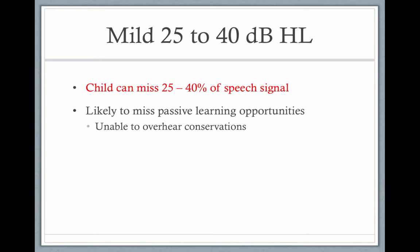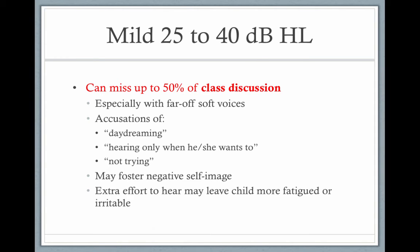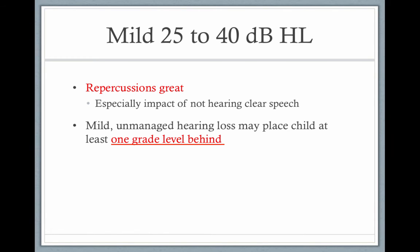With a mild hearing loss from 25 to 40 dB, children can miss passive learning opportunities and are unable to overhear conversations, missing up to 50% of classroom discussion especially with far-off or soft voices. They may be accused of daydreaming or only hearing when they want to, which fosters negative self-images and affects their desire to engage with school. A mild unmanaged hearing loss places a child at least one grade level behind.